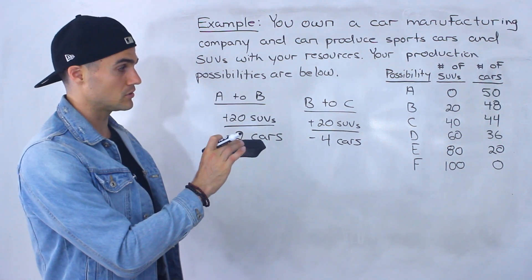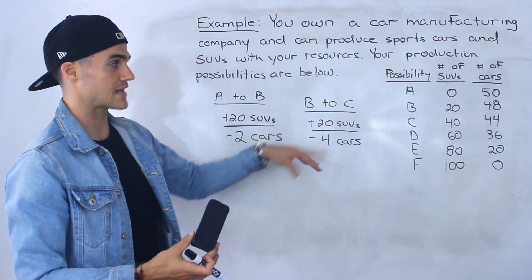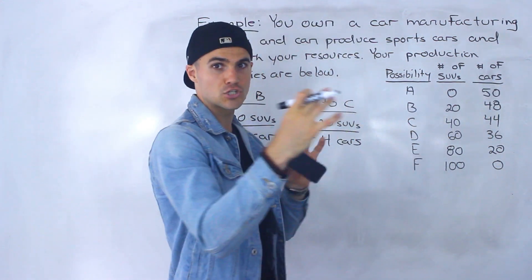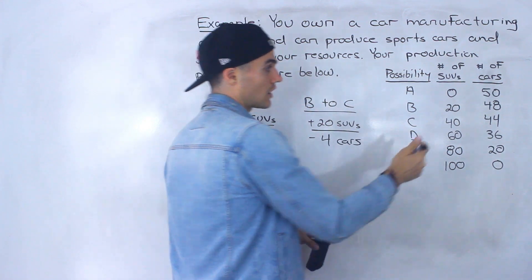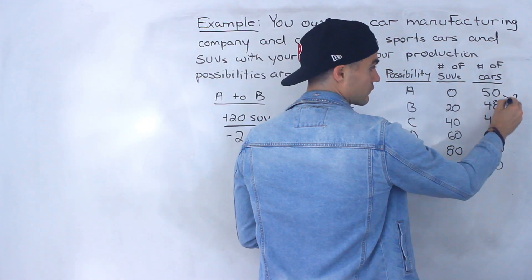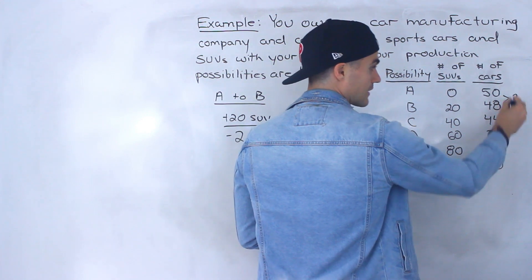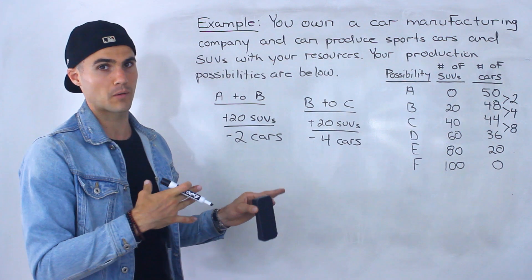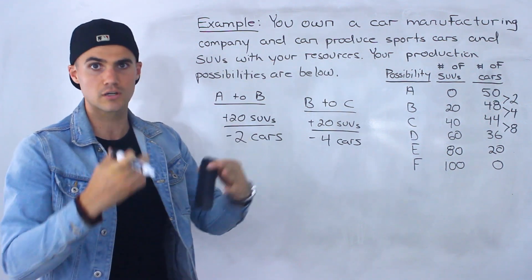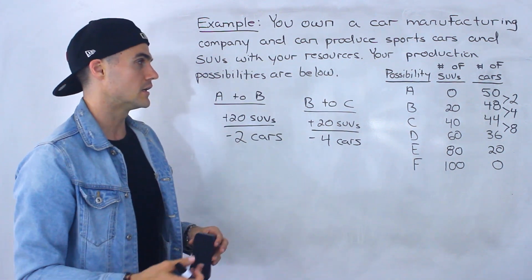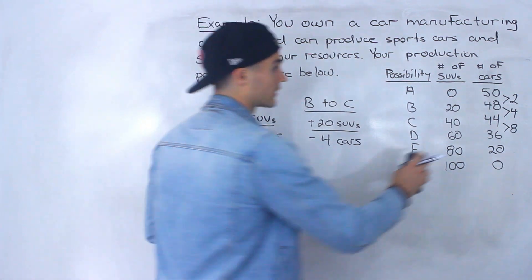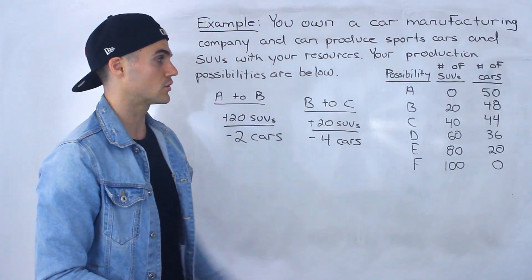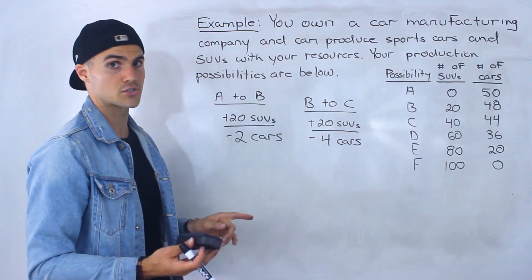It is actually possible to get more detailed information and make this table yourself, but you'd need a lot more detail about the relationship of that increasing opportunity cost — the pattern of how it changes (here it's 2, then 4, then 8). That pattern would have to be given to you, similar to finding first and second differences in high school math to identify linear or quadratic functions. In this chapter, you're going to be given this table when asked to make the production possibilities curve.